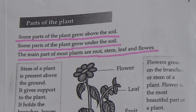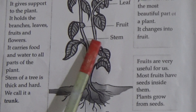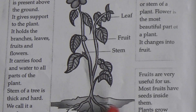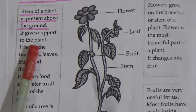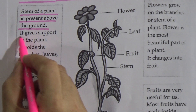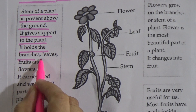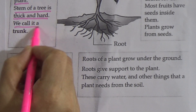Now we will discuss the functions of these parts. The stem of a plant is present above the ground. It gives support to the plant — underline this and memorize it. Stem holds the branches, leaves, fruits, and flowers. It also carries food and water to all parts of the plant. The stem of a tree is thick and hard, and we call it a trunk.